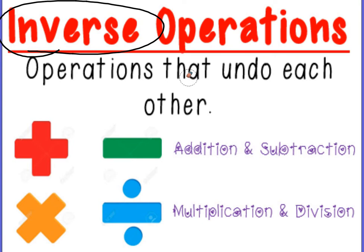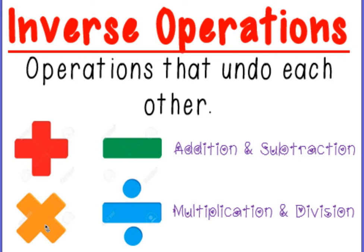Inverse operations, then, are operations that undo each other. So the inverse operation of addition would be subtraction, and the inverse operation of multiplication would be division and vice versa. So if I multiply something and I want to undo that, I have to use the inverse operation of division.